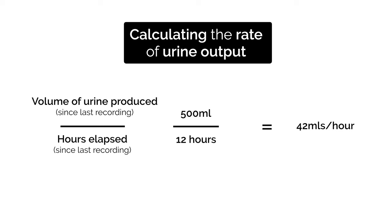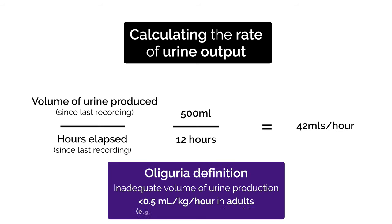Now oliguria, which refers to the inadequate production of urine, is defined as less than 0.5ml per kilogram per hour in adults. So in a 70kg adult, their urine production would be considered inadequate if it was below 35ml per hour. That might indicate that the patient is dehydrated, or potentially has an acute kidney injury or even urinary obstruction.